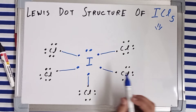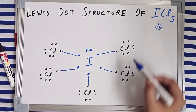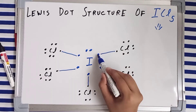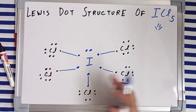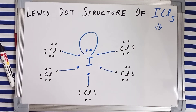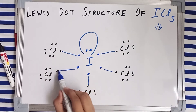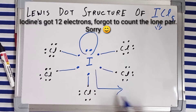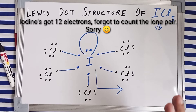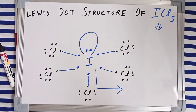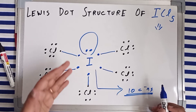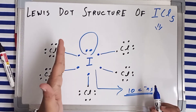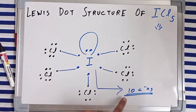Counting the valence electrons: one, two, three, four, five, six, seven, eight. Each chlorine now has eight electrons because the two bonding electrons are shared — one, two, three, four, five, six, seven, eight. Each chlorine has gained stability. Iodine has a single lone pair, and its total electron count after bond formation is one, two, three, four, five, six, seven, eight, nine, ten. It has surpassed eight electrons and is an exception to Lewis's octet rule, which states that each atom in a molecule wants to have eight electrons.